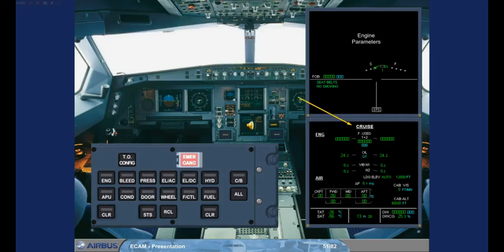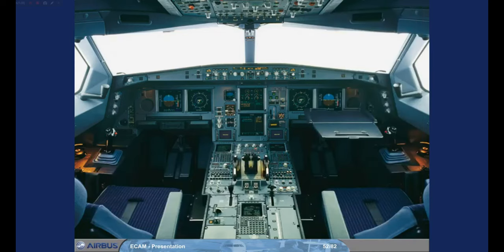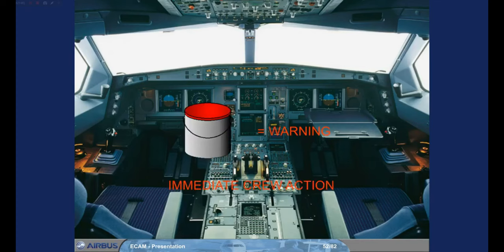The status page is removed and the cruise page is displayed. So far, we have looked at how the ECAM system advises you of minor failures. We will now look at what happens when there is a serious failure that requires immediate action. To demonstrate this, we will use an engine fire. As before, we will not concentrate on the system failure, but on ECAM indications and procedures.